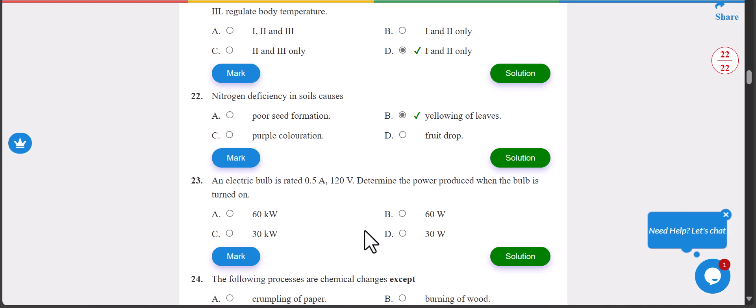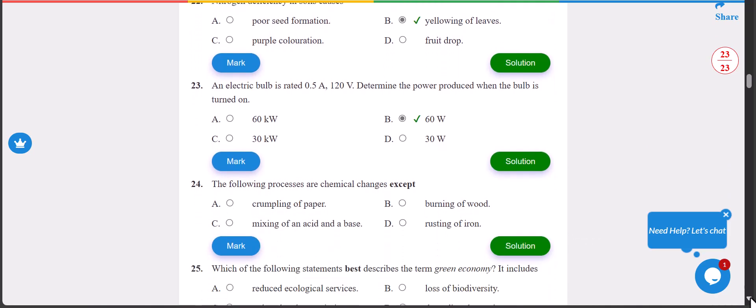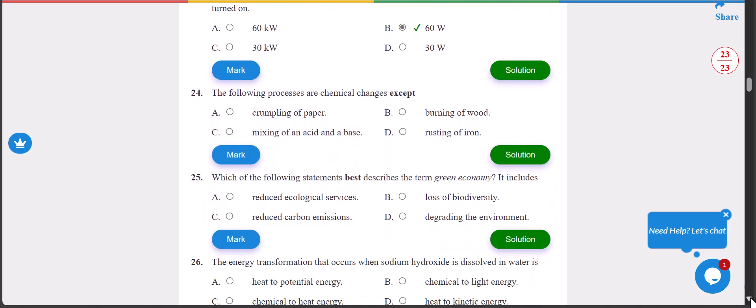Number 23: an electric bulb is rated 0.5A, 120 volts. Determine the power produced when the bulb is turned on. This is a simple calculation - it is 60 watts. B, 60 watts.